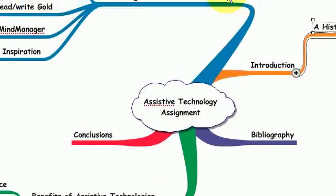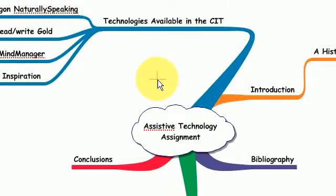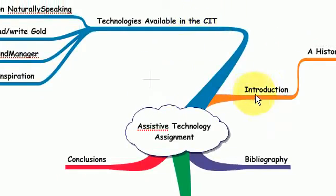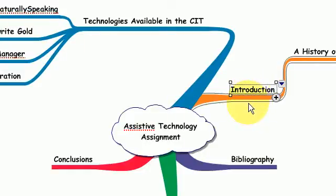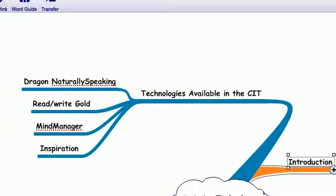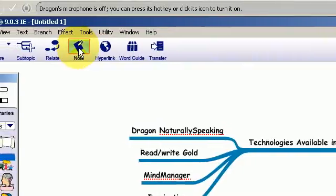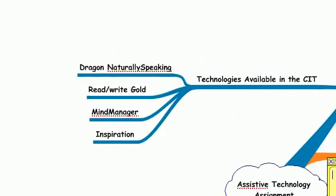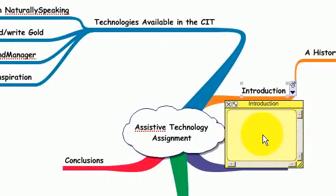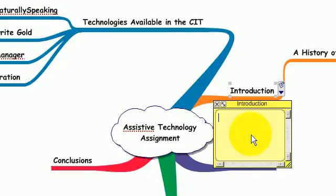The next thing I want to do is I want to add on the content. For instance, in the introduction I'm going to click on the Introduction branch, I go up to Note, I press that, I go back down to my introduction and I start talking about the assistive technology assignment and so on and so forth. For the purposes of this demonstration I'm going to fill it up with jargon.